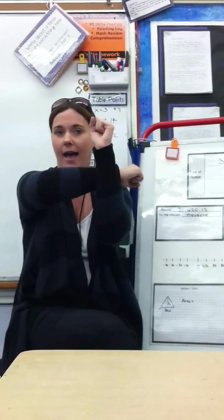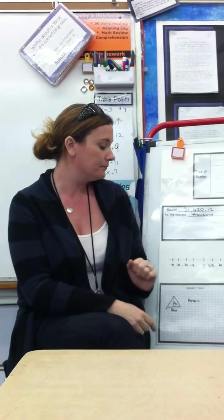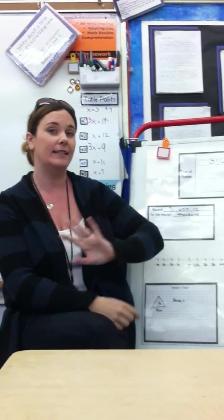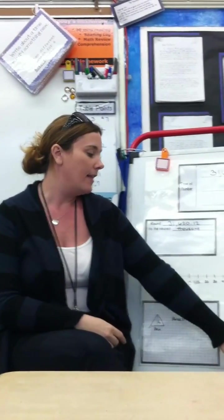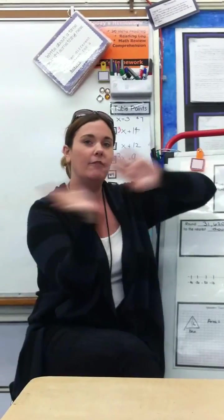The mean, we add, then divide. The range is the distance between the smallest and the biggest. And the outlier is the number that's really far away.